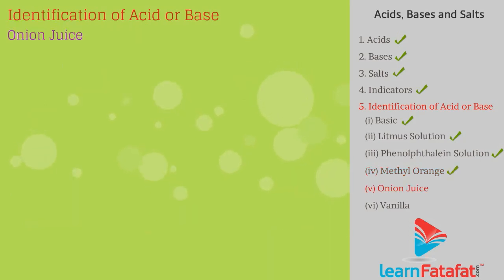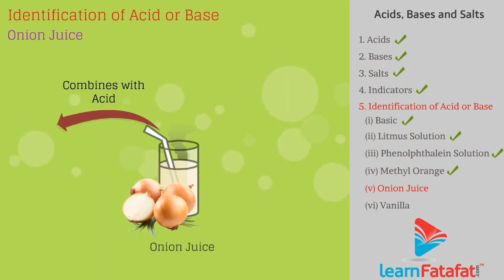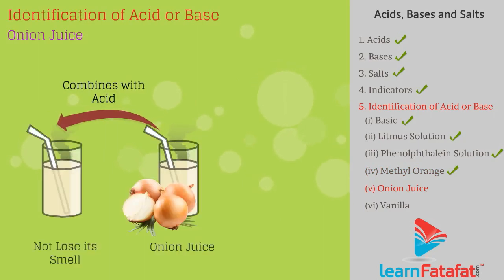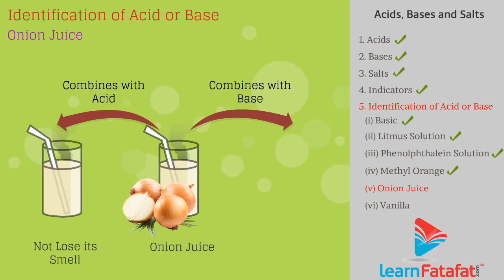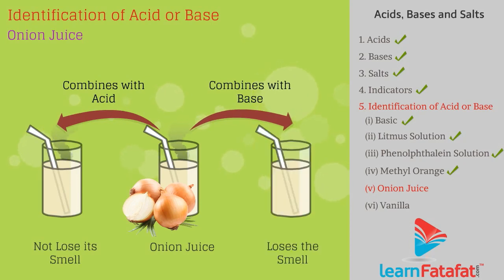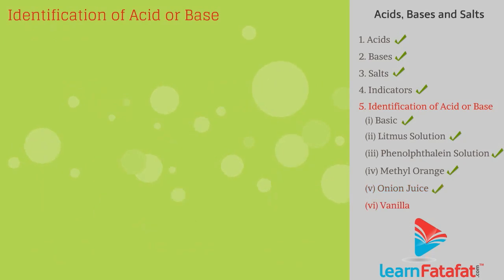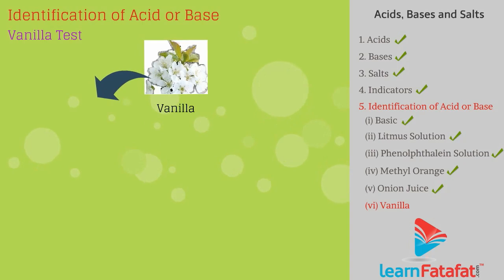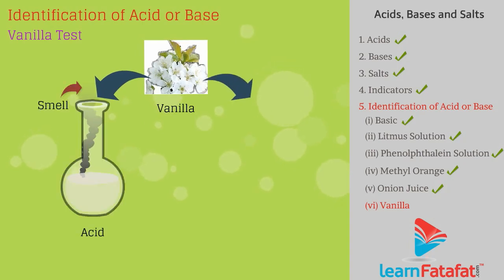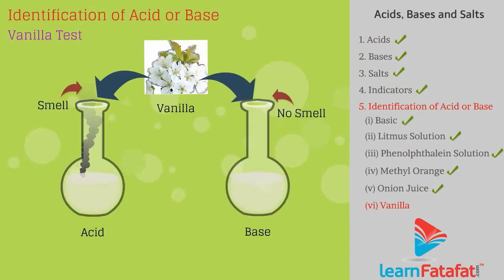Onion juice. In acids, onion juice does not lose its smell. While in bases, it loses the smell. Vanilla. In acids, vanilla does not lose its smell. While in bases, it loses the smell.